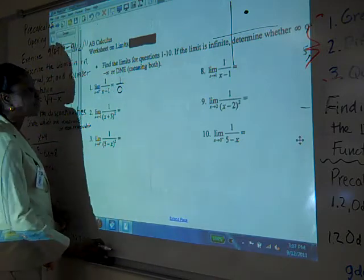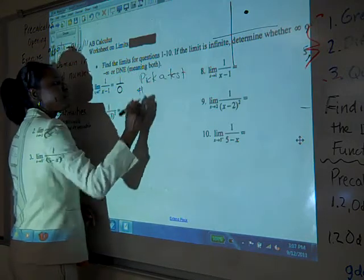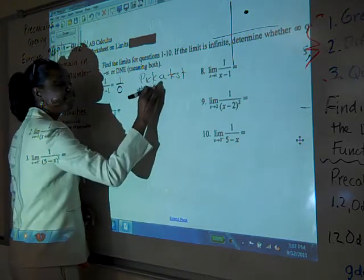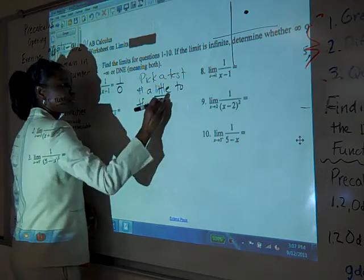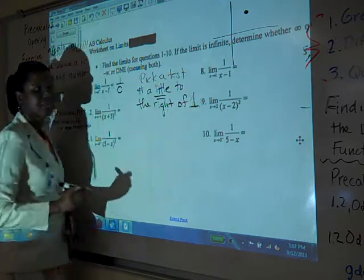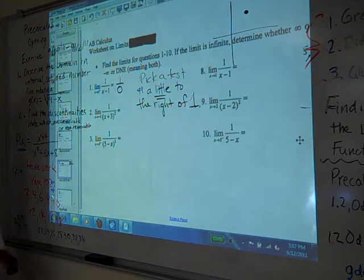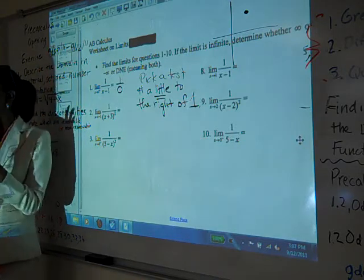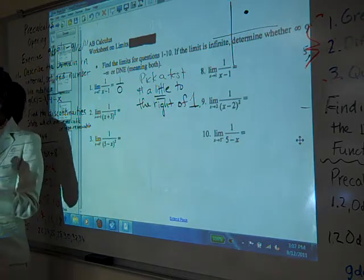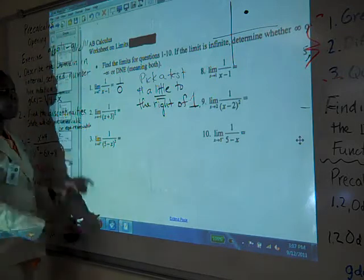So how do we figure this out? Pick a test number. A little to the right of one. Give me a number. A little bit to the right of one. Just a little bit. One point one. One point one. That's a little bit to the right. One point nine nine. That's good. But I want a little bit to the right. The reason I do that is in case there's more than one vertical asymptote. I don't want to jump over the other one. So you stay pretty close to your test number. So we good? Yeah.